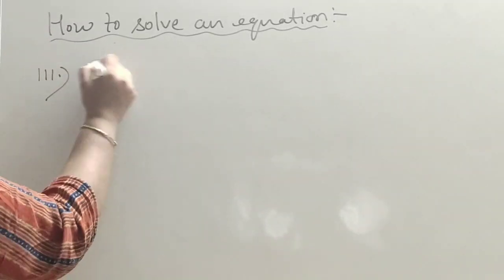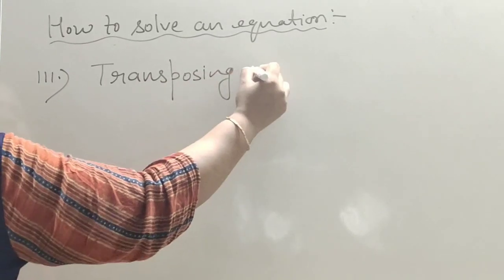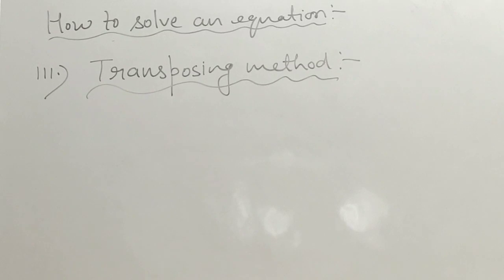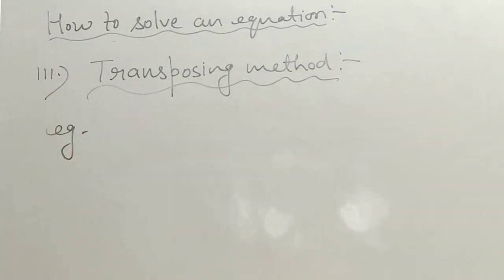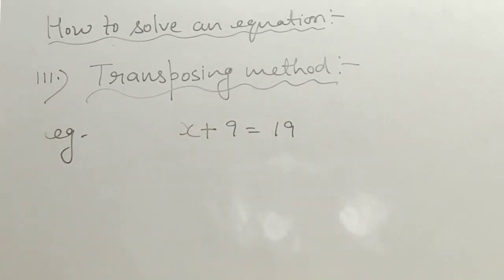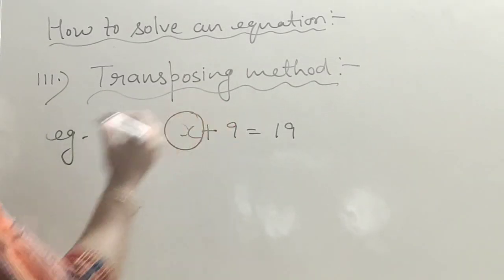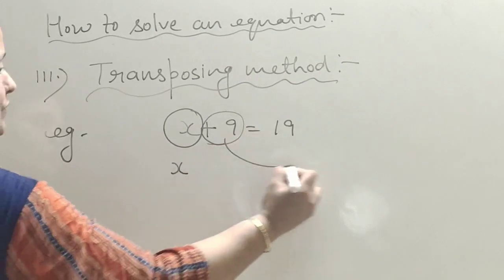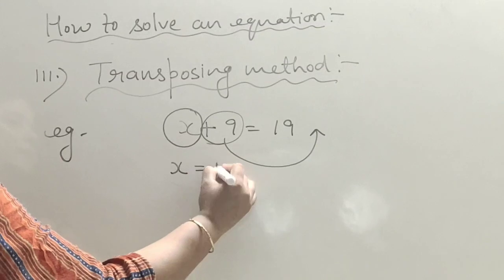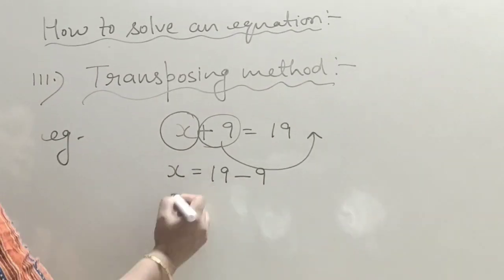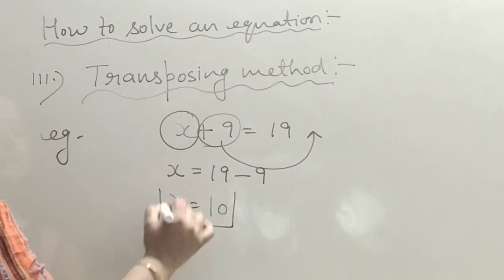The third method is the transposing method. In transposing, what is on the left shifts to the right, and what is on the right comes to the left — with sign change. For example, x plus 9 is equal to 19. We keep the variable on the left and shift the constant term to the right. Since 9 is positive on the left, it becomes negative 9 on the right. So x equals 19 minus 9, which is 10.